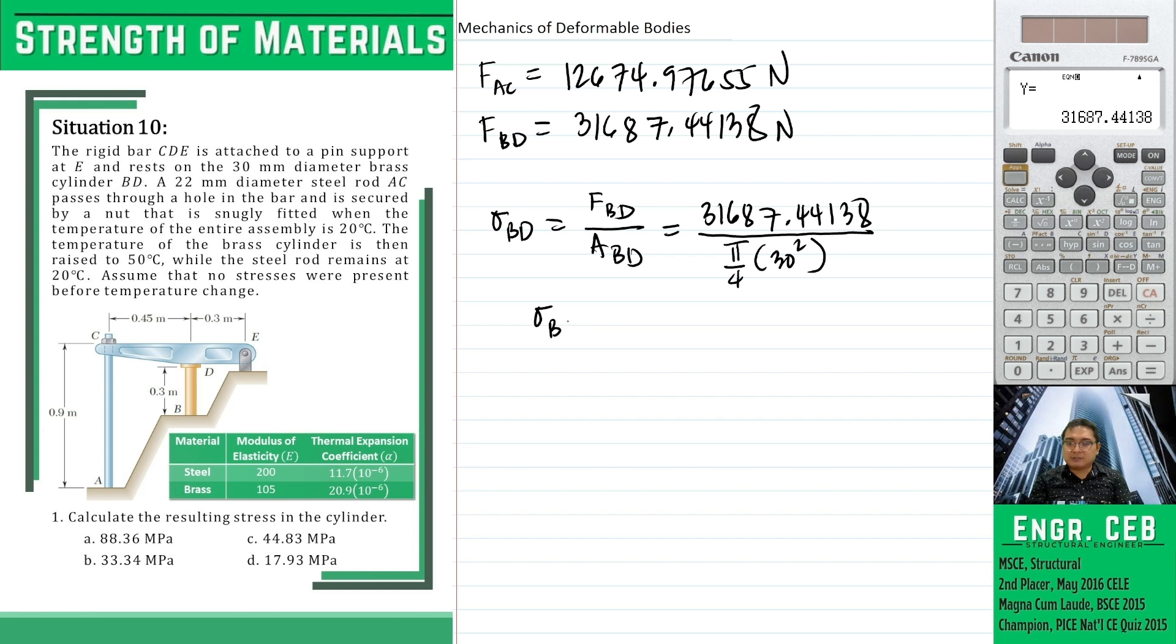the stress in bd is 44.82855937 megapascals. That is letter c. Next problem, calculate the resulting stress in bd. So same procedure,